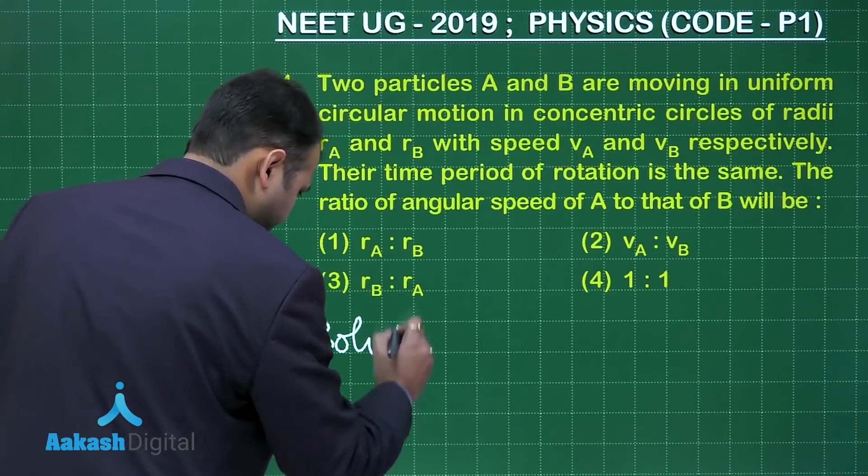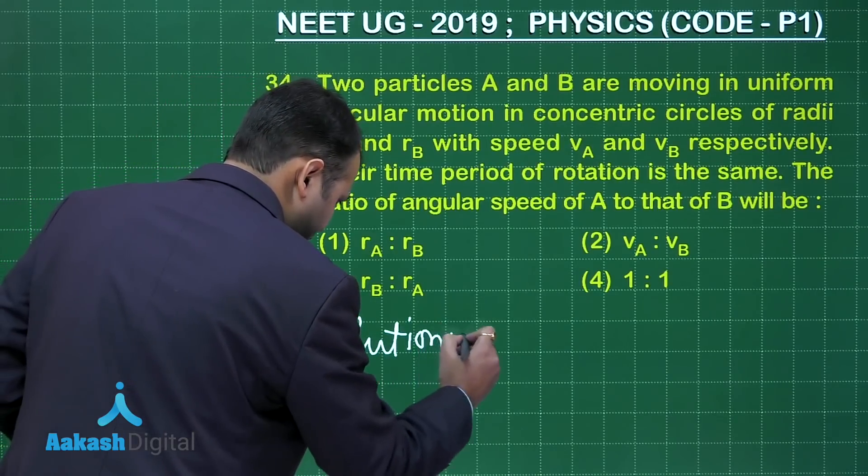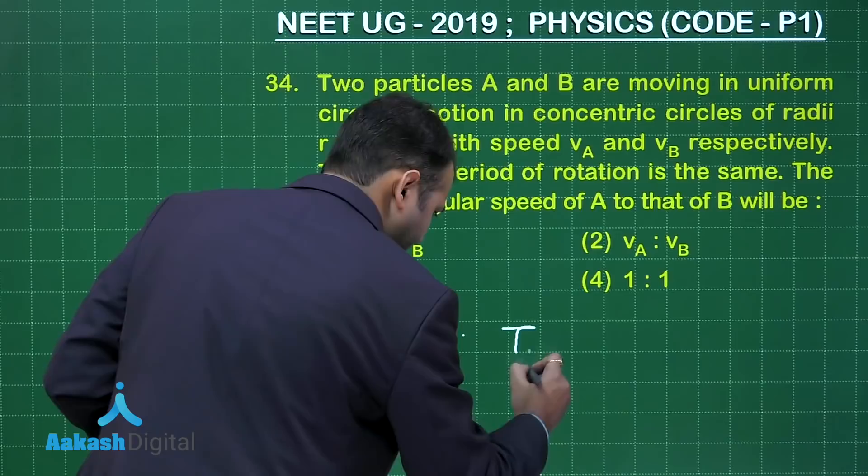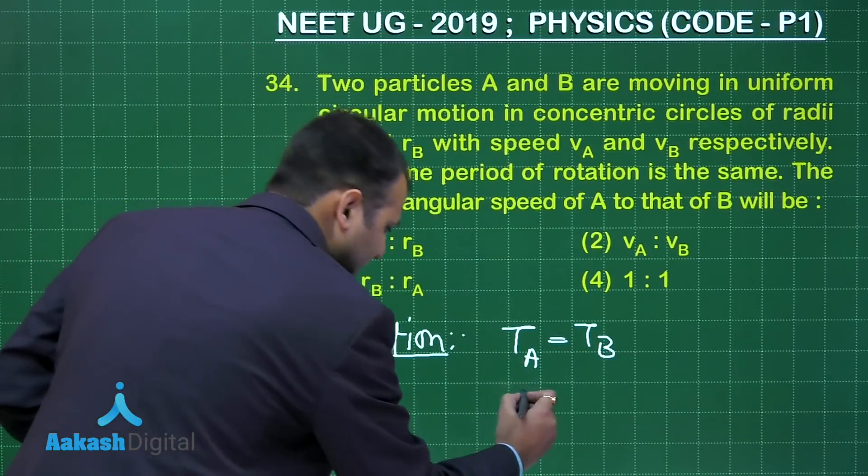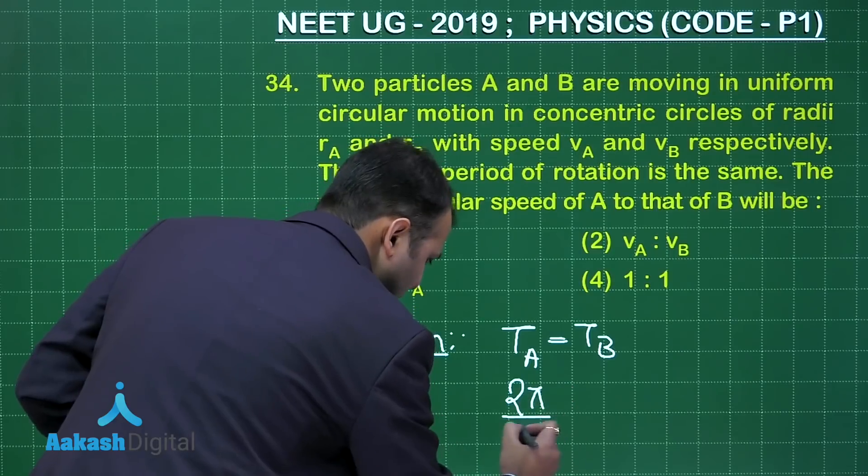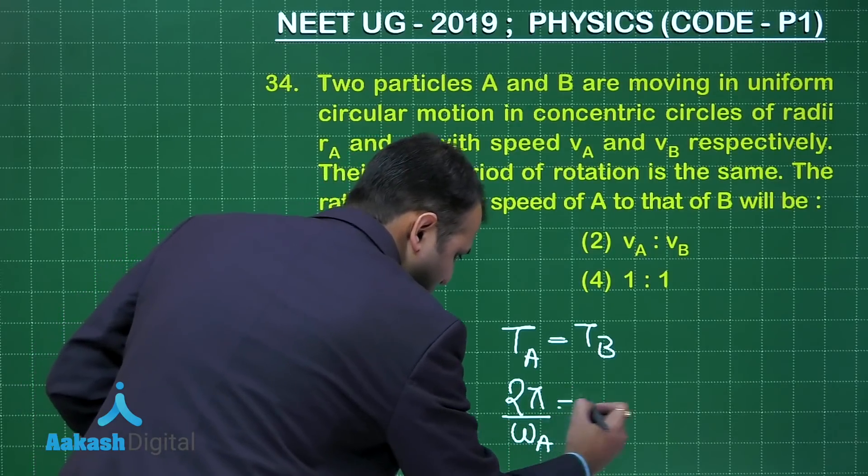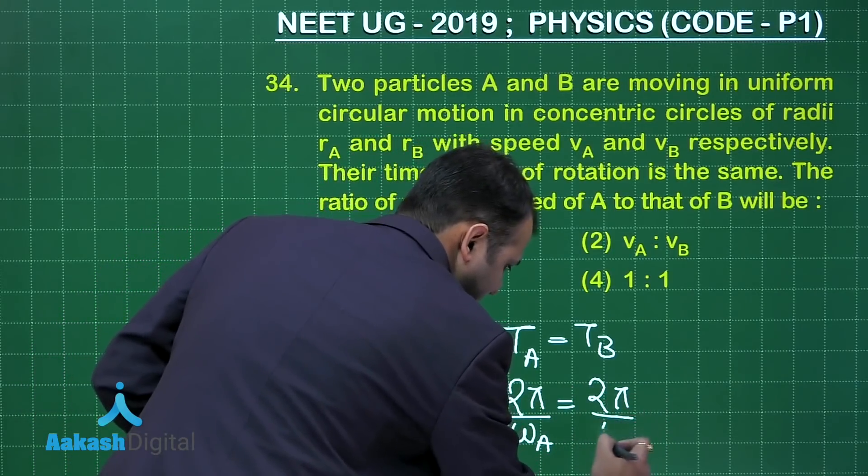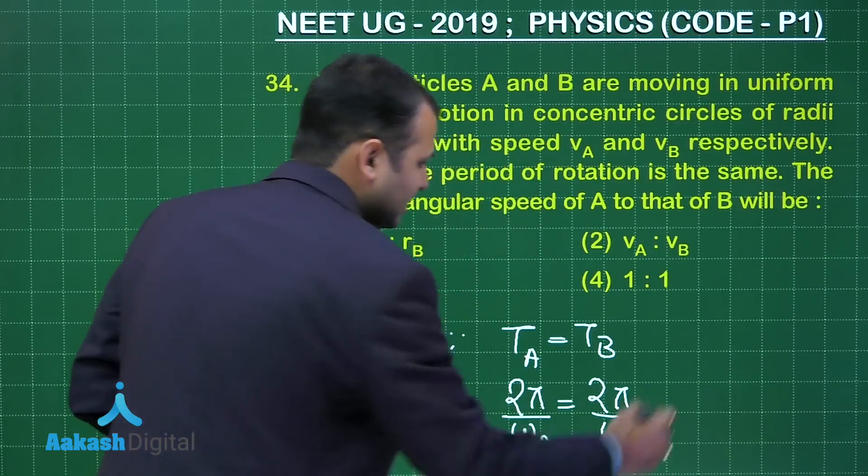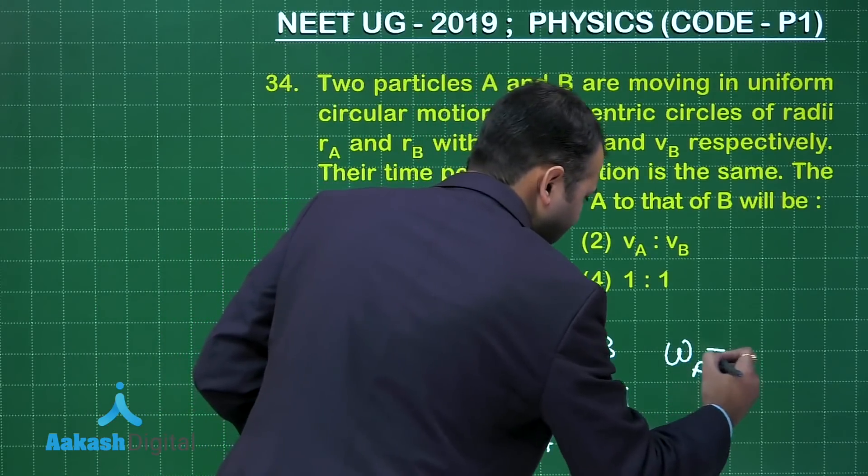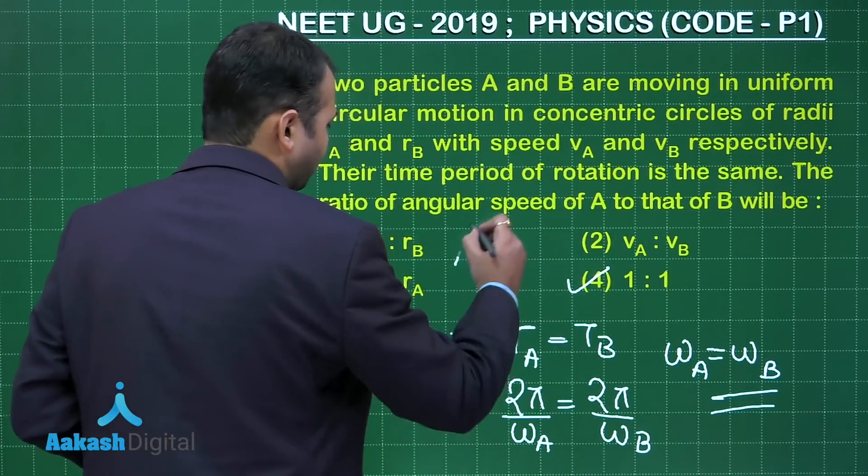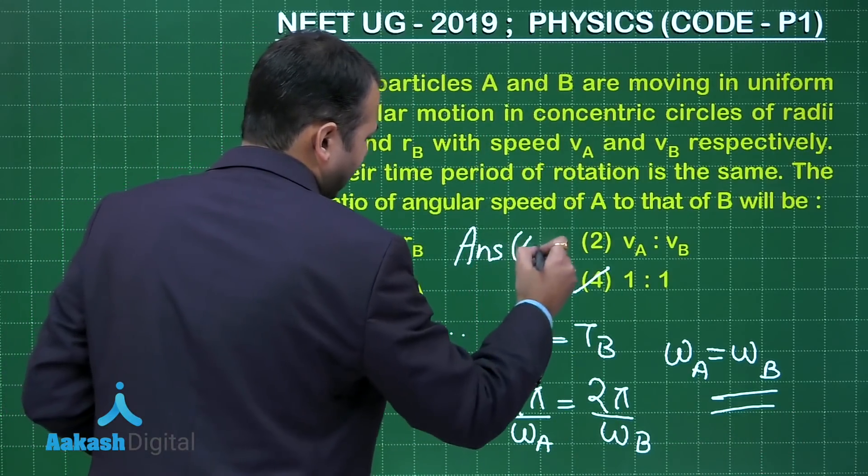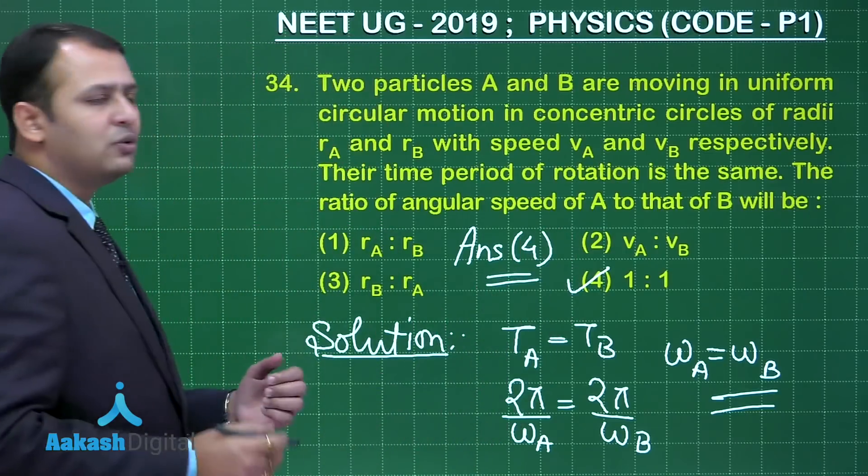It's a pretty easy question where it's given that the time period of rotation is the same, so TA equals TB. You are very well aware the time period can be written as 2π/ω, so 2π/ωA equals 2π/ωB. From this it's easy to understand that ωA will be equal to ωB. Option number 4 would be the right answer here.